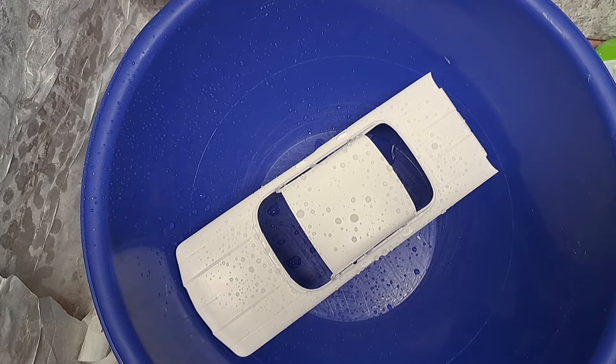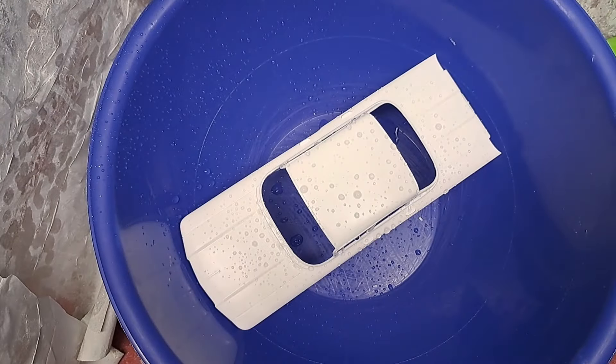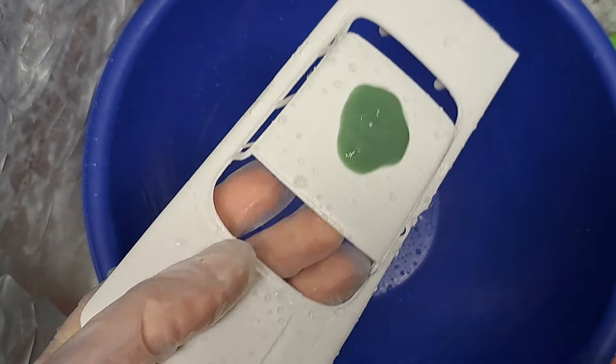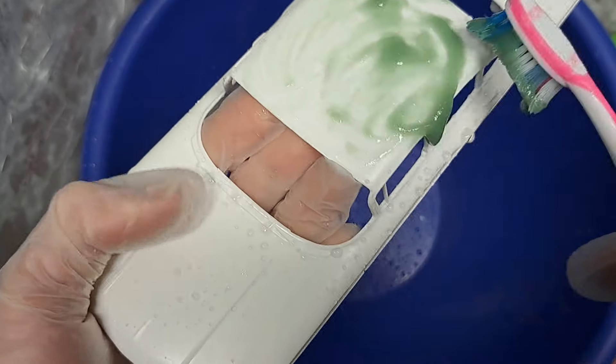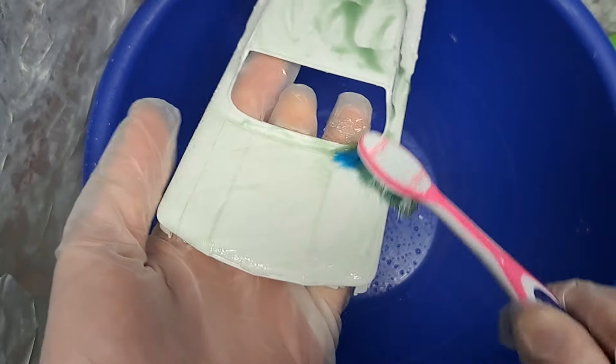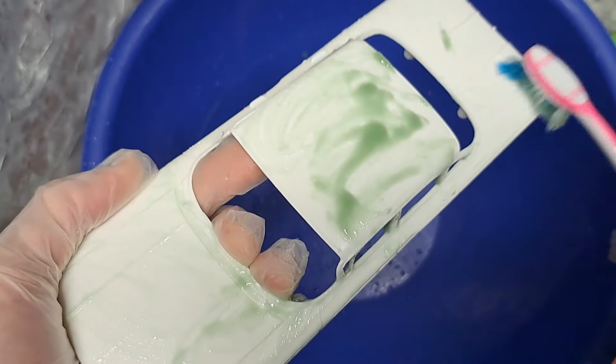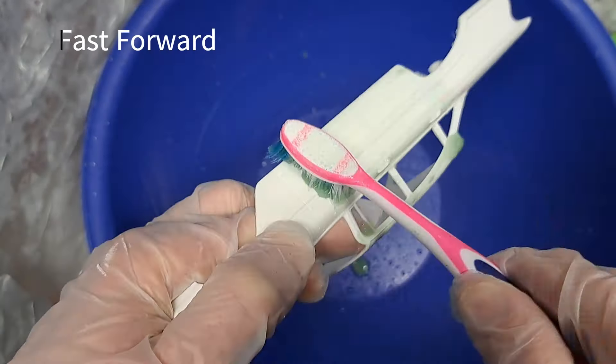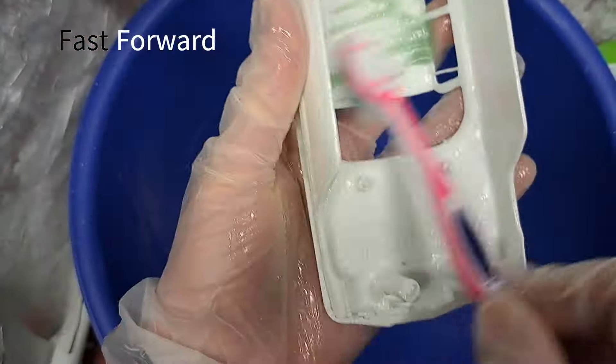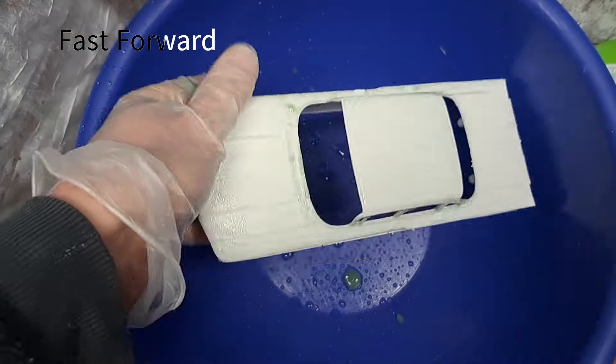The first cleaner I'm going to be using is Cascade. Yours probably looks blue, mine looks green because it's old, but it works fine for what we're using it for. I'm using a toothbrush to spread the Cascade over the entire body, top side and underside. I'm not really focused on scrubbing right now, I'm just trying to get everything coated. Then I leave it sit for five minutes to start breaking down the contamination.